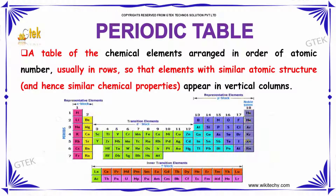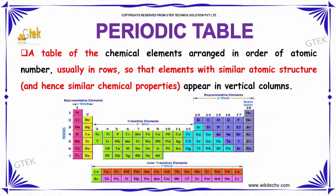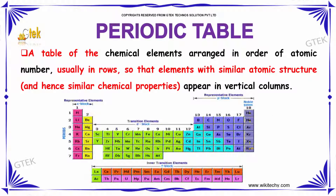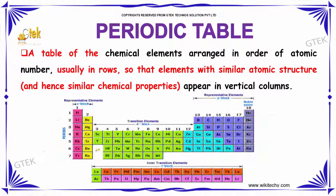Elements in the same vertical column share similar chemical characteristics. These are all called s block elements, these are all d block elements, this one is p block, and here is a specialized one — that's noble gases, and the lanthanides and actinides, extracted to form the f block elements.